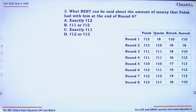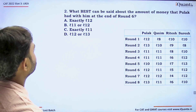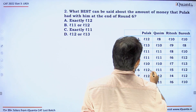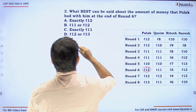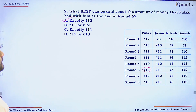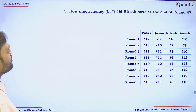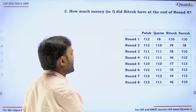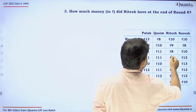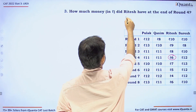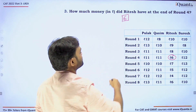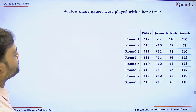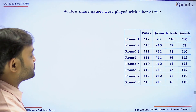What best can be said about the amount Pulak had at the end of Round 6? At the end of Round 6, Pulak had exactly 12 rupees — option A is correct. How much money did Ritesh have at the end of Round 4? At the end of Round 4, Ritesh had 6 rupees.